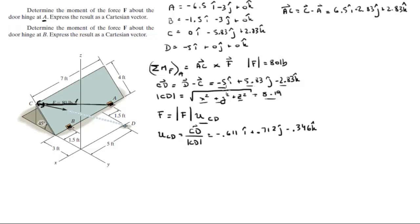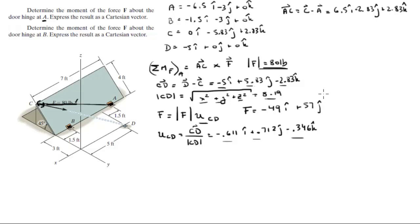Multiplying the magnitude of 80 pounds by the three unit vector components gives the Cartesian vector form of F, which comes out to be negative 49i plus 57j minus 28k.